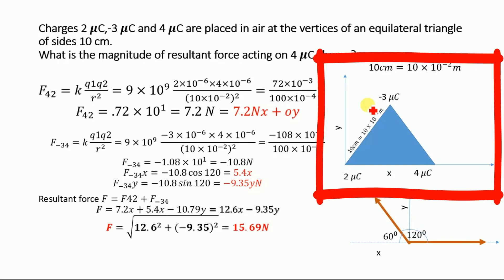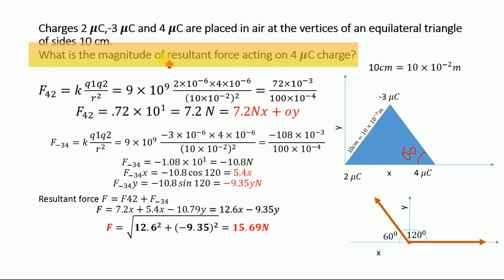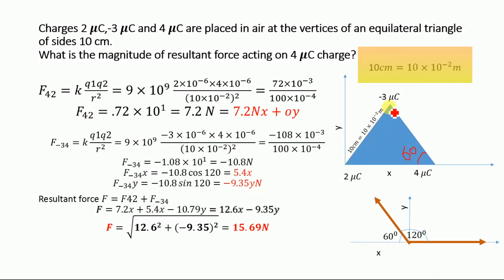According to the given data, we have three charges: 2 µC, minus 3 µC, and 4 µC. All these charges are placed at the vertices of an equilateral triangle — a triangle in which all sides and all angles are equal, with each angle equal to 60 degrees. The side length is given as 10 cm, which equals 10 × 10⁻² m. We have just converted the unit from cm to m.